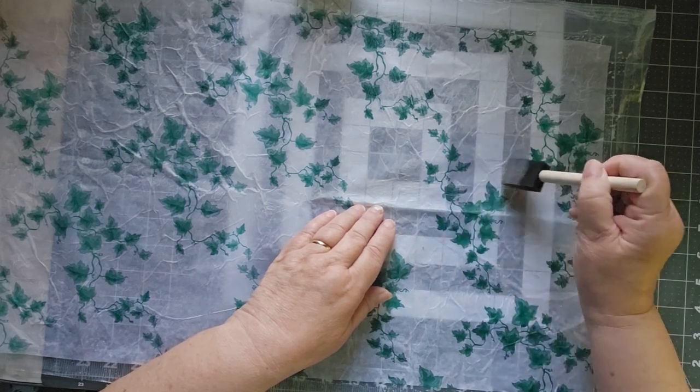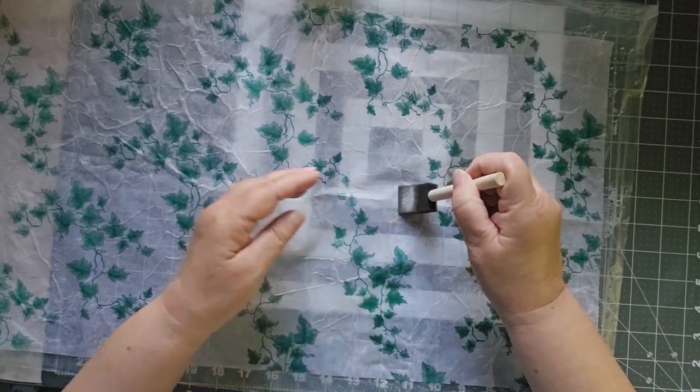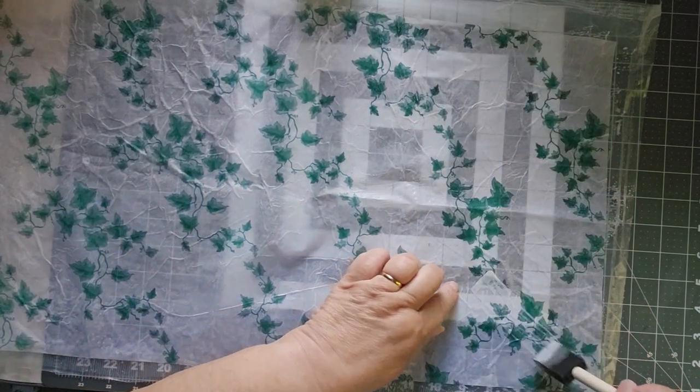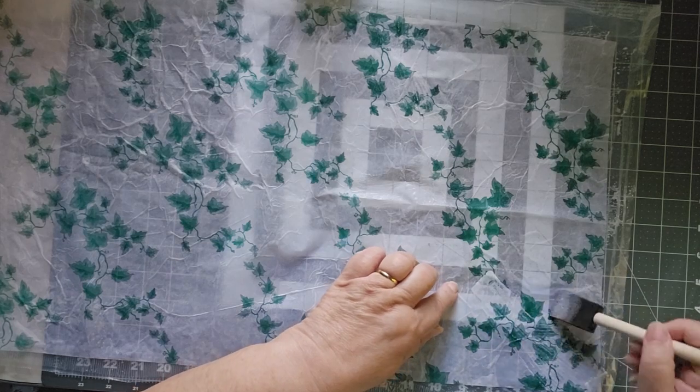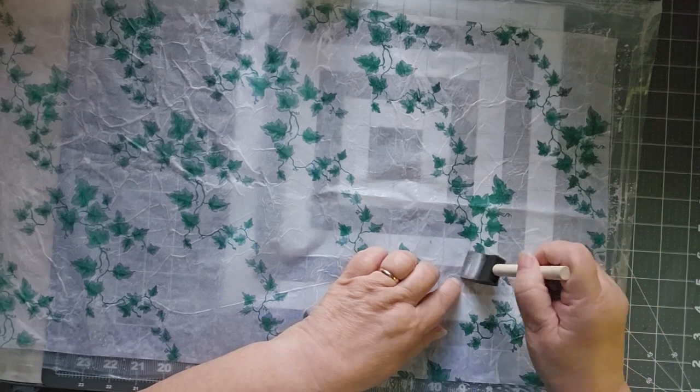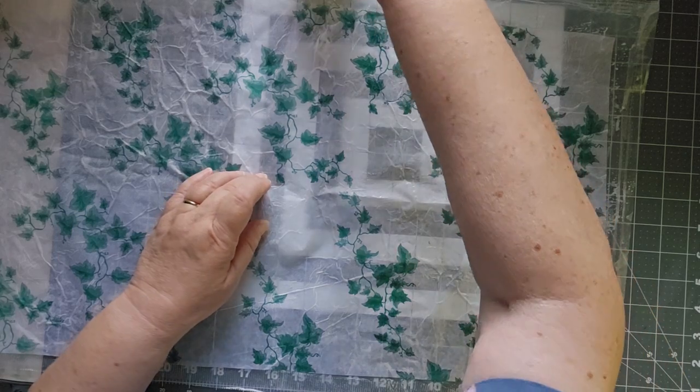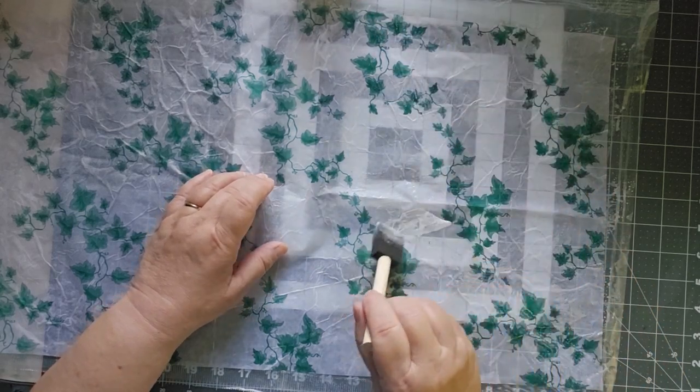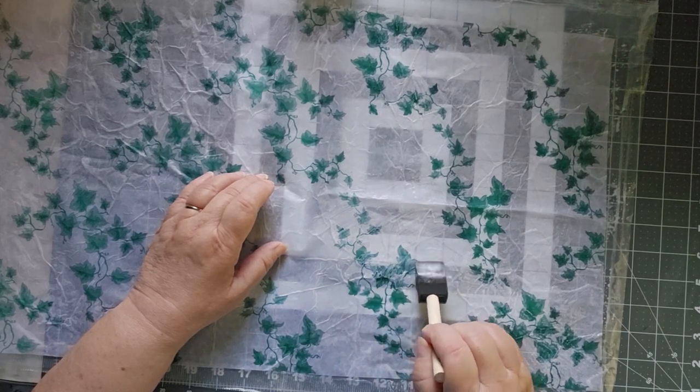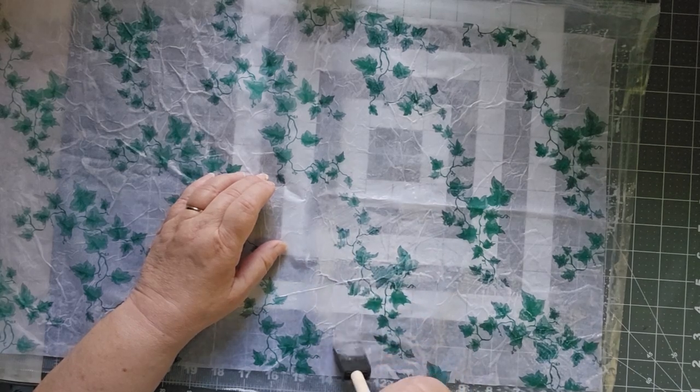And again, I'm getting rid of the bubbles and I am making a bunch of wrinkles instead. I'm coming from my centers out, and I'm just making sure that everything has a covering of the Mod Podge.